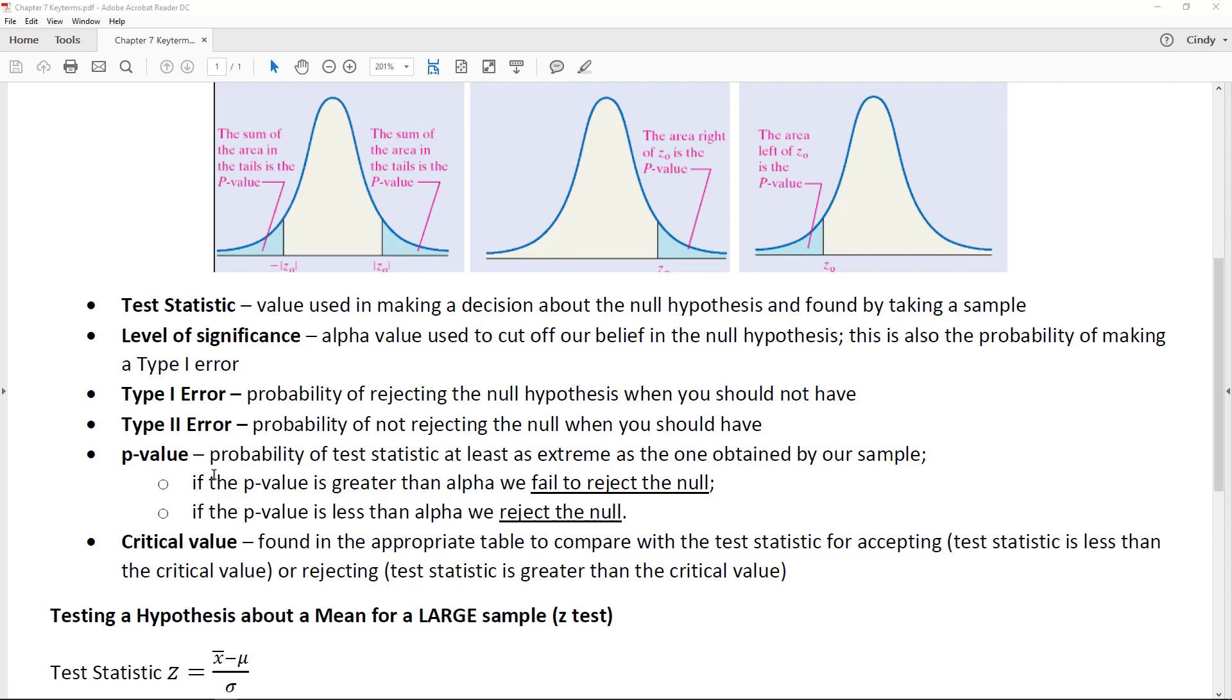If the probability is high—is greater than whatever our alpha that will be given—then we fail to reject the null because we would expect to get that with that high of a probability. If the p-value is less than alpha, then we say, well, if what they're telling us is true, why is this probability so low? So we would reject the null.